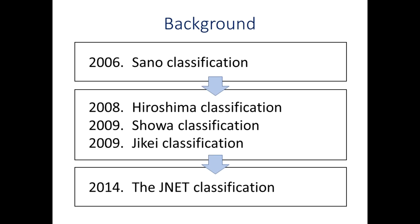Here you can see the history of NBI magnifying endoscopic classification of colorectal tumors in Japan. The Sano classification was the first magnifying NBI classification published in 2006. Based on this classification, several other classifications were proposed, such as the Hiroshima, Showa, and Jikei classifications. To standardise these magnifying NBI classifications, the J-Net classification was established in 2014.